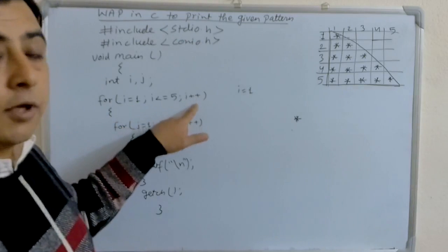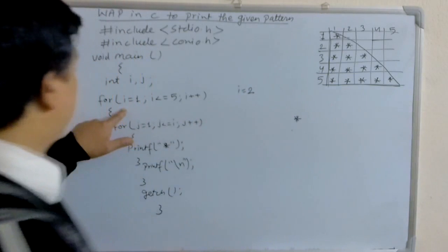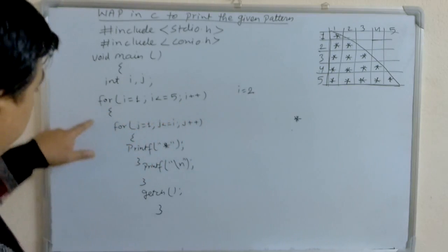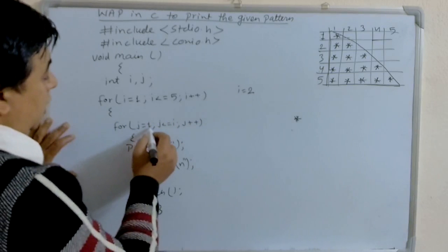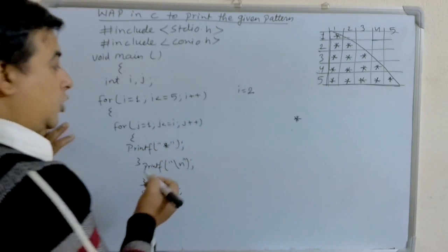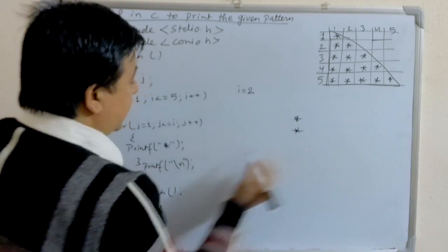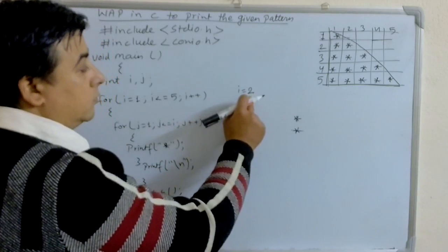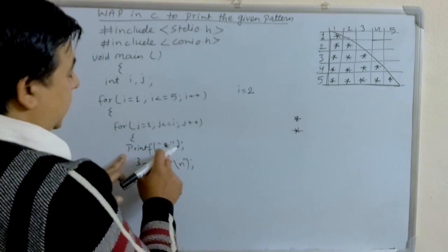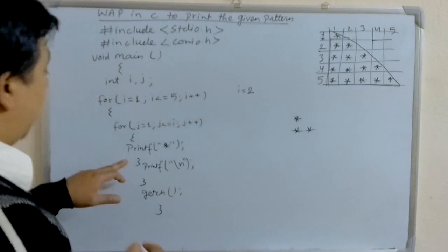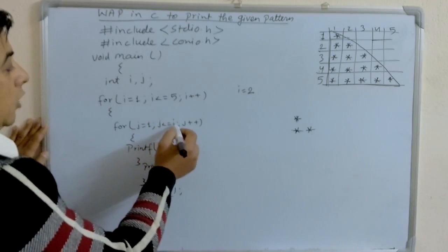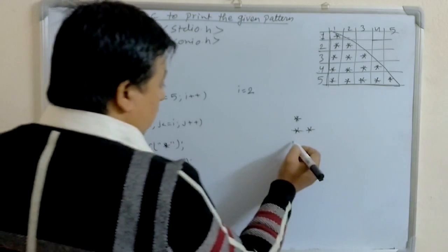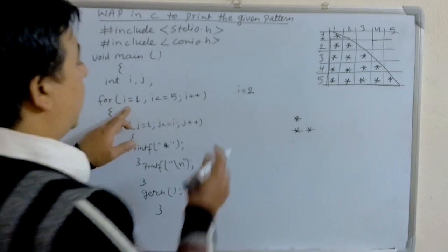The value of i increases to 2. i less than or equal to 5 is true, so it enters the second row. j is equal to 1, j less than or equal to 2 is true, so it prints one asterisk. j becomes 2; 2 is less than or equal to 2 is also true, so the next asterisk is also printed. Then j becomes 3; 3 less than or equal to 2 is false, so it comes out of the loop, prints the next line, and i increments to 3.